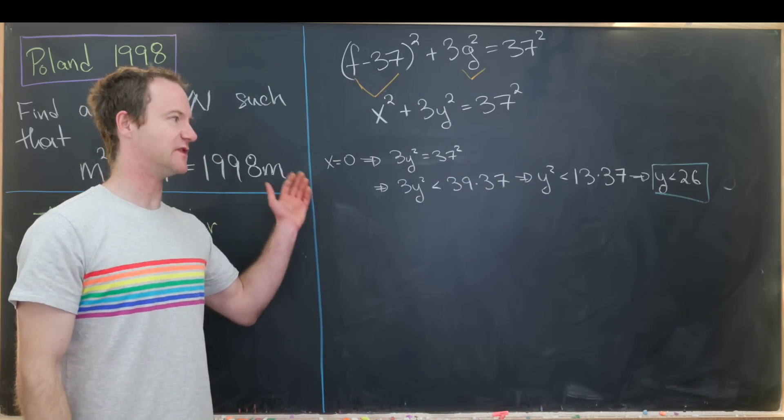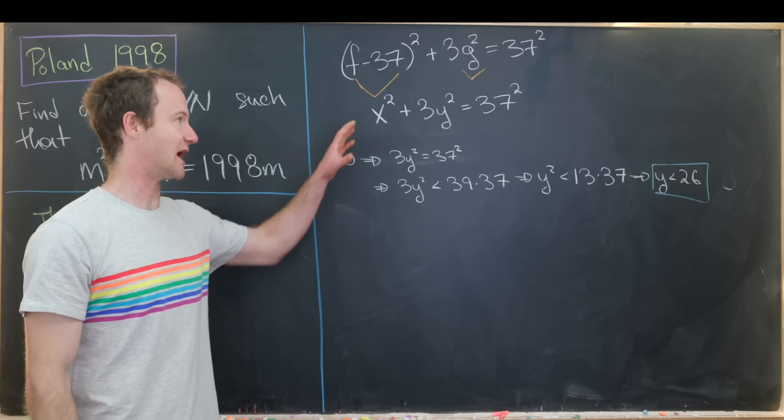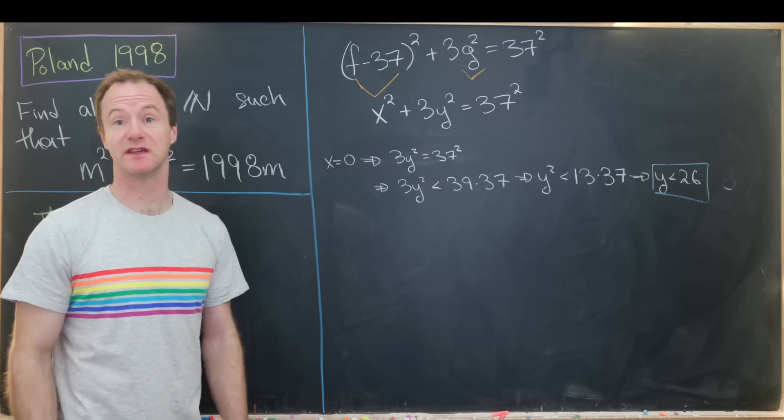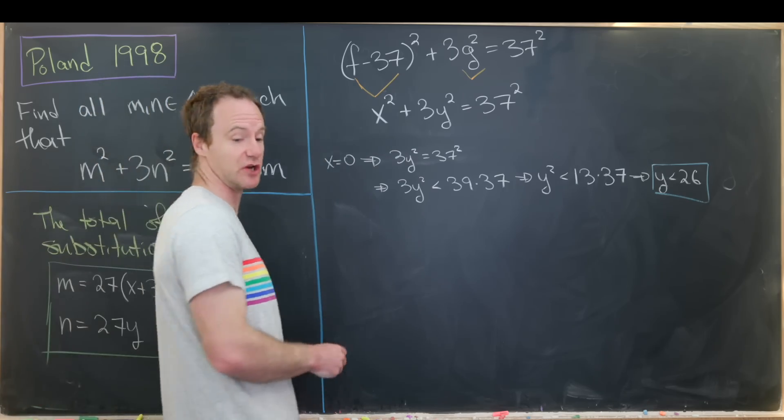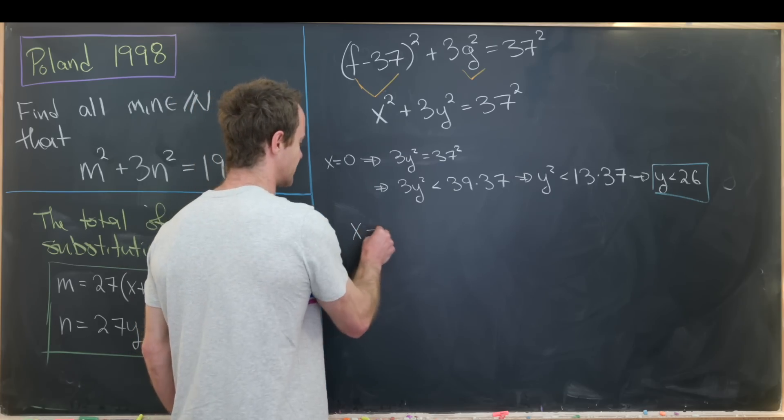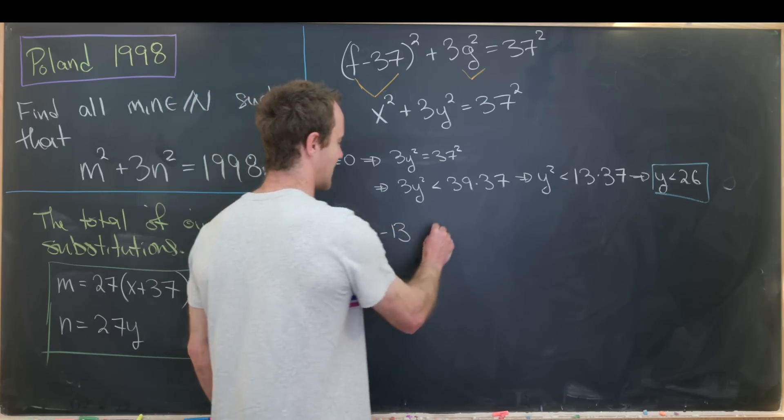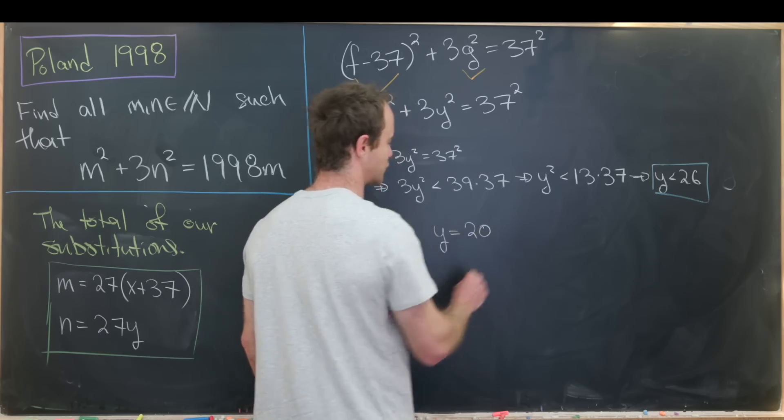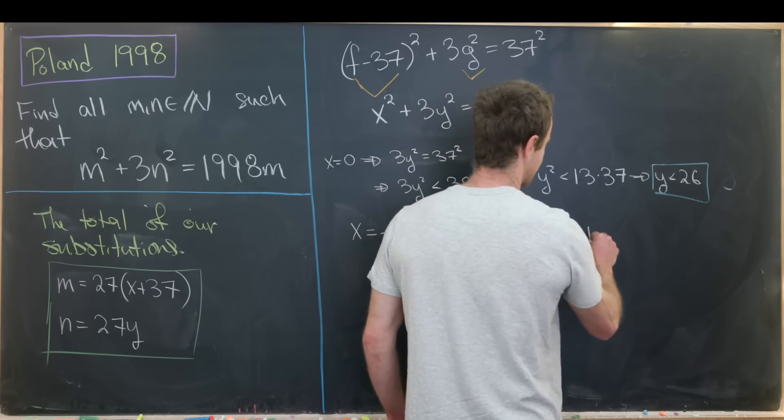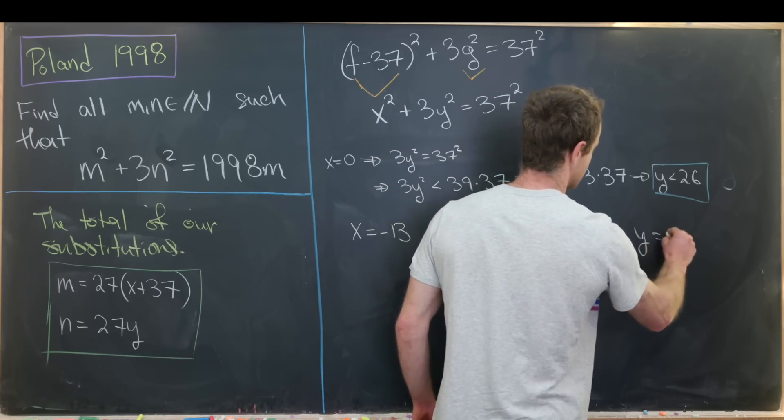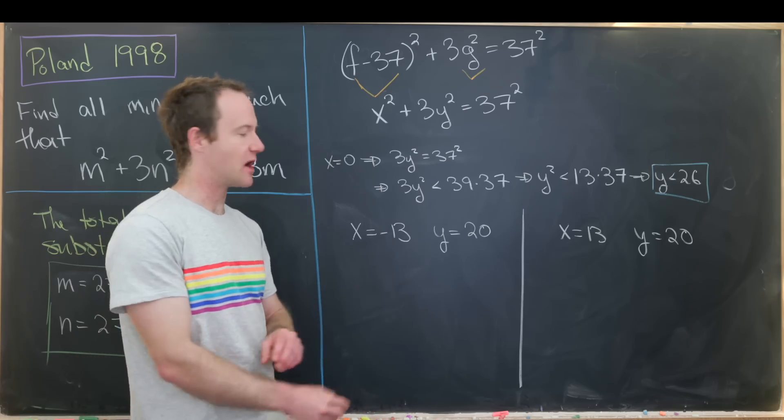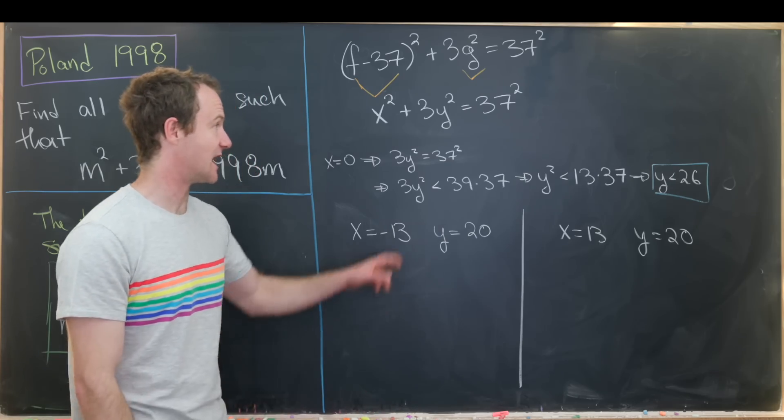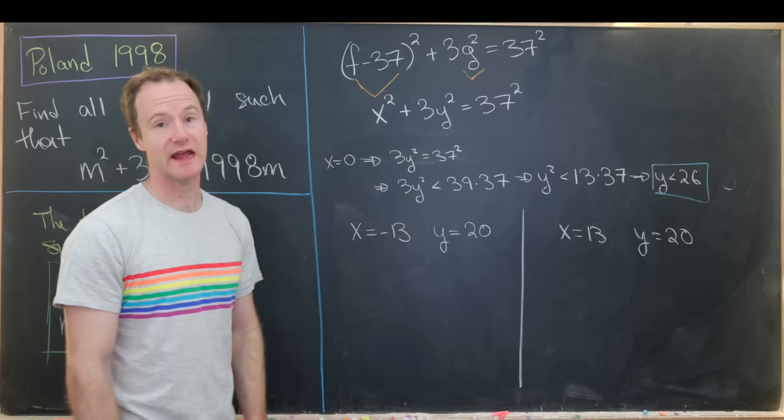And so I'll let you guys maybe think about how to minimize the number of cases you'll have to guess and check on your own and just jump to the solutions. So here we get a solution of x equals minus 13 and y equals 20, or x equals 13 and y equals 20.